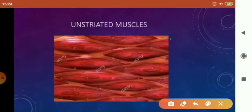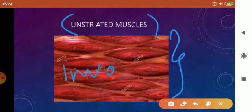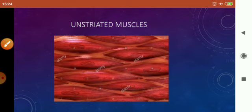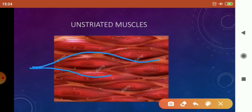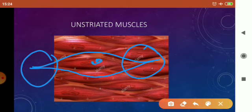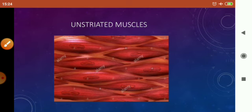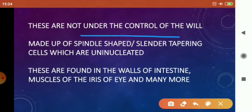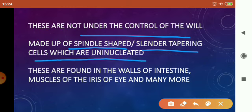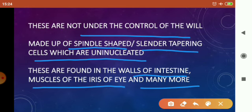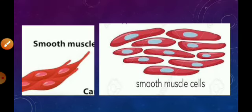Now let's look at unstriated muscles, also called smooth muscles. These muscles are responsible for performing involuntary actions. An important feature is that these muscle fibers are spindle-shaped, meaning they have tapering ends, and each cell has only one nucleus. They are not under the control of the will and are found in the walls of the intestine, muscles of the iris of the eye, and other areas where involuntary actions are performed.